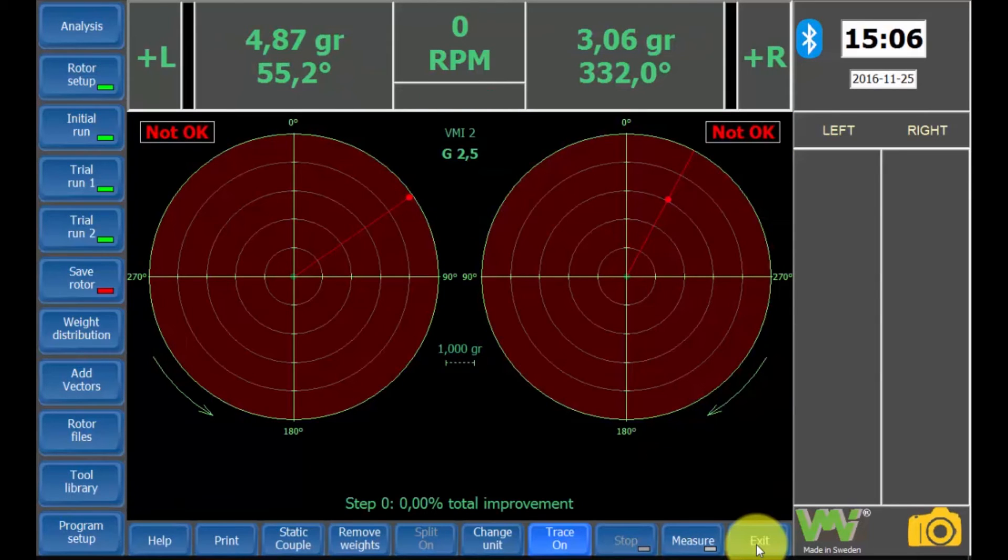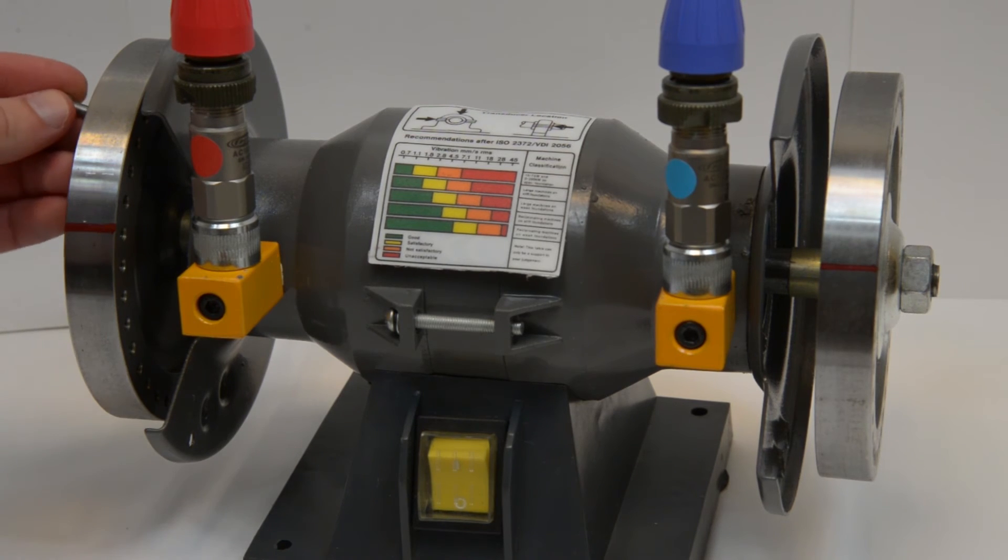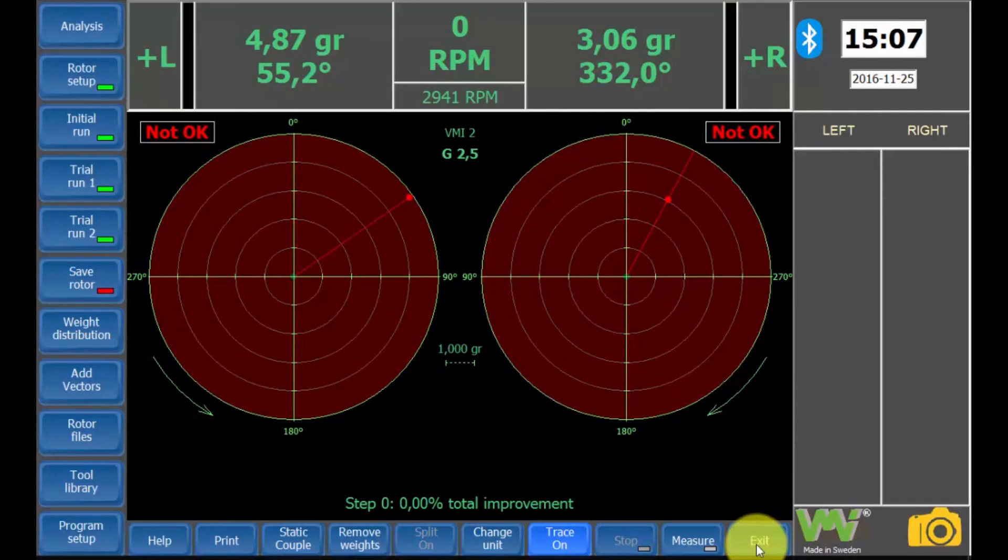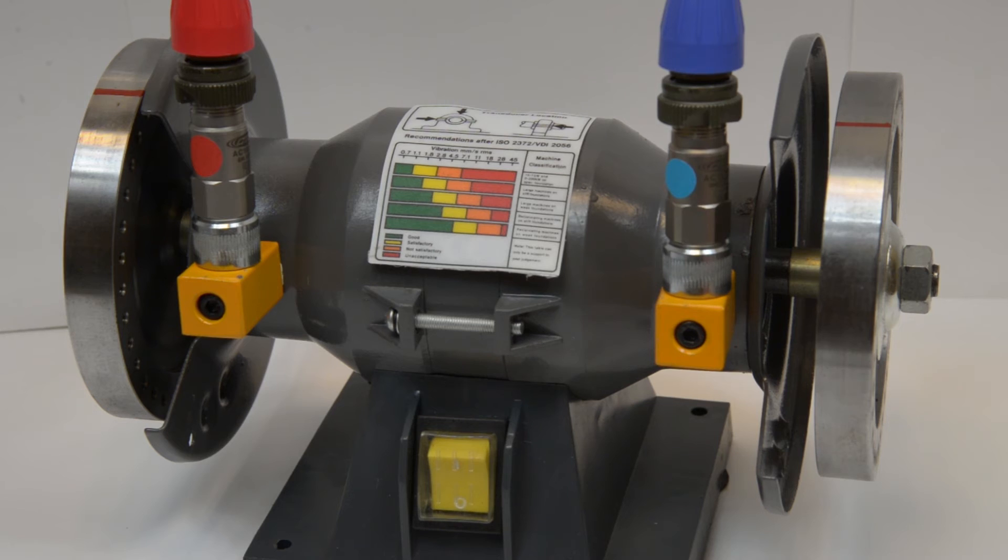Now we have our first result. As you can see, it says not okay on both sides and this indicates that the vibrations are larger than allowed. At the top of the screen, you can see the recommended balancing weight and angle for the right plane and the left plane. Firstly, remove the trial weight from the right side of the rotor. This is important, otherwise the results from the balancing will be incorrect. According to the results, we need to place a weight of 4.87 grams at 55.2 degrees on the left plane and a weight of 3.06 grams at 332 degrees on the right plane.